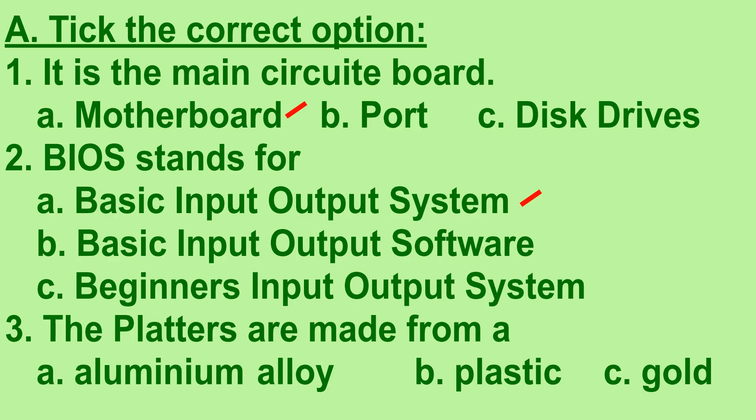Now let's move on to exercises. Let's begin with tick the correct option. The question is: the platters are made from — Option A: aluminum alloy, Option B: plastic, Option C: gold. And the right option is Option A, aluminum alloy.